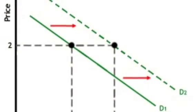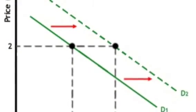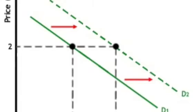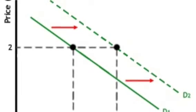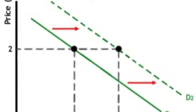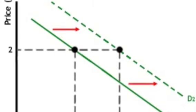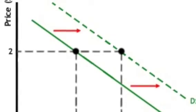Similar to a supply curve, demand curves also follow similar traits. If you have a shift to the right in a demand curve this basically means that demand has increased. Otherwise a shift to the left in a demand curve shows a lowering or fall in demand.